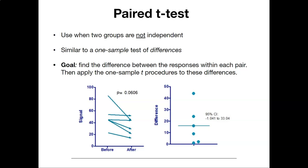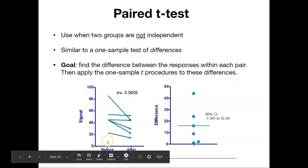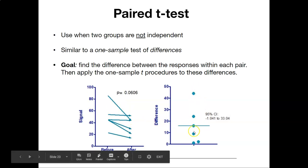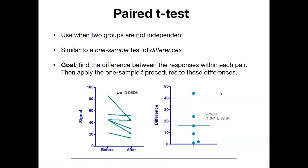The goal of the paired t-test is to find the difference between the responses within each pair. Then basically do the same kinds of procedures we did with a one-sample test to examine the differences. So as an example here, we might have something happen. We measured things before something happened and then after. Then we have a signal there. Now we have the difference, and all we're doing is doing a statistical test on the difference between those two observations.